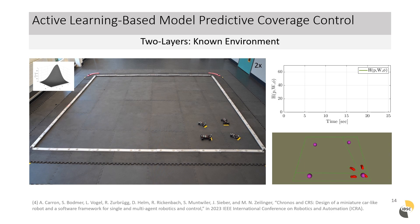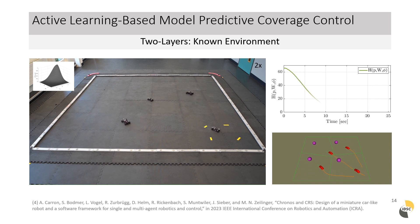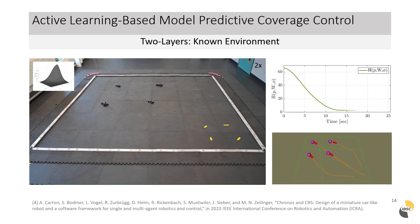The result of the two-layer algorithm implemented using the CRS software framework in combination with our miniature race cars is shown in the following video. The partitions, centroids, and MPC trajectories are visualized on the side. Additionally, in green we see the decreasing locational optimization function.